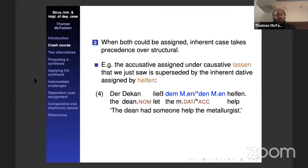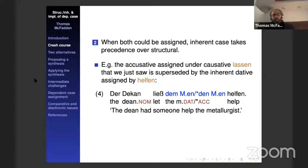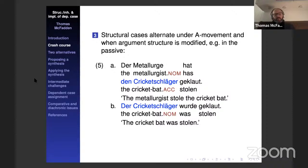The second difference: when a DP is in a position where it could in principle be assigned either an inherent case or a structural case, the inherent case takes precedence over the structural one. Inherent cases typically show up in contexts where there would have been a structural case available if you had chosen a different verb, and it's always the inherent case that shows up. The third difference — the diagnostic most commonly used — is that structural cases undergo systematic alternations with each other in contexts of A-movement or argument structure modification. Inherent cases don't. The classic example: structural accusative becomes structural nominative if you passivize a clause, whereas inherent dative stays dative.